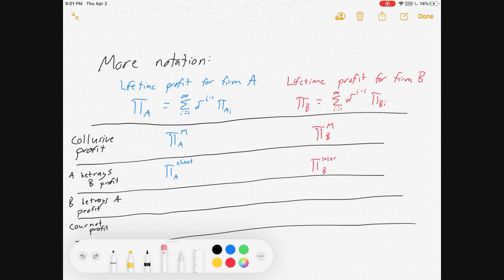And B is a loser and gets loser profit. If B betrays A, A is the loser, B is the cheater. And then a Cournot profit, we'll just put a C on it for Cournot.